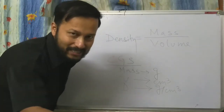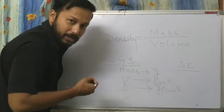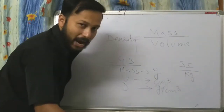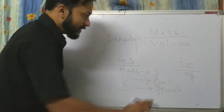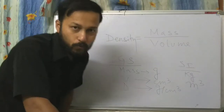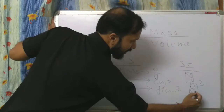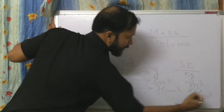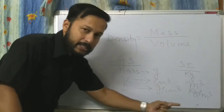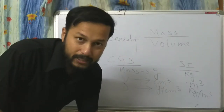In the SI system, mass is kg and volume is meter cube. So the unit of density is kg per meter cube. We have to remember both CGS unit and SI unit.